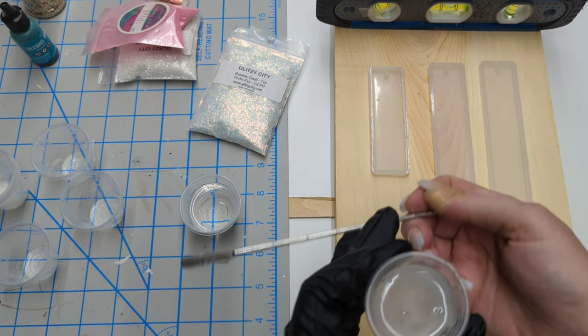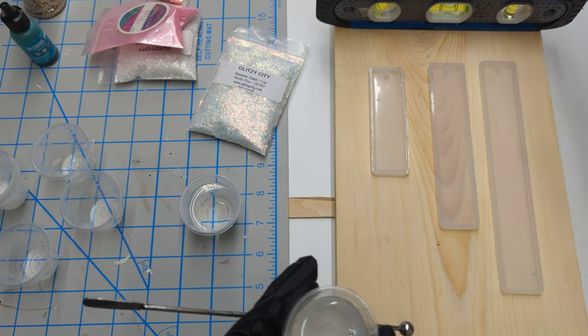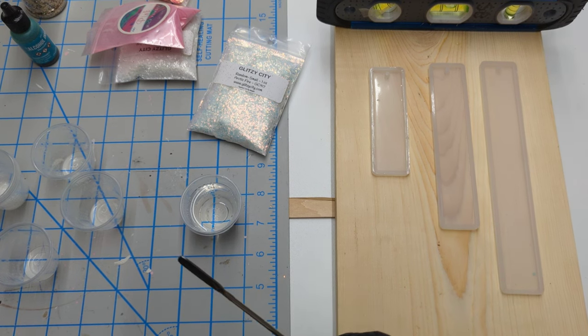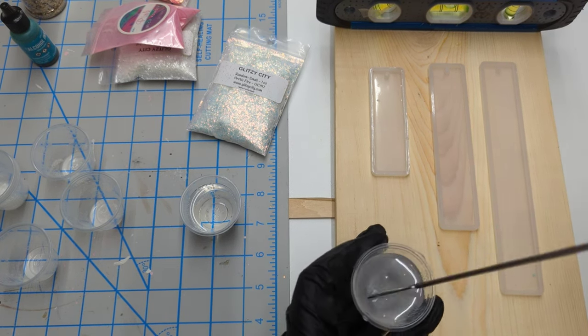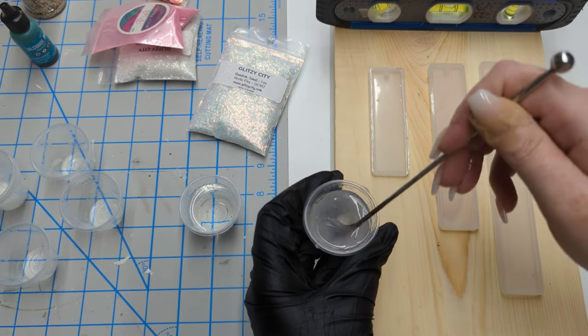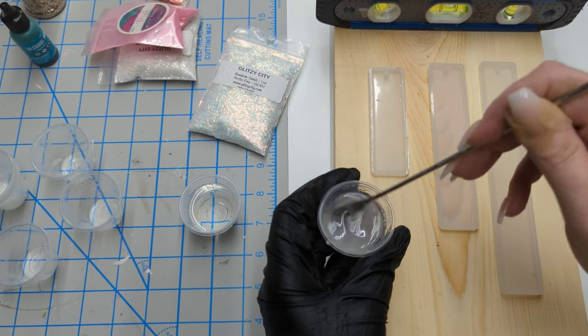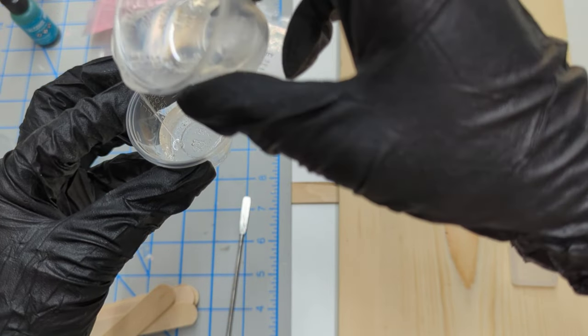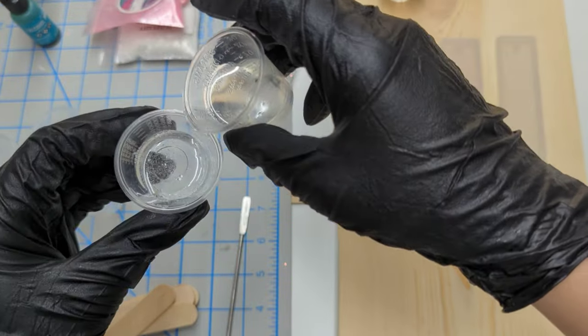I've mixed up a total of 40 milliliters of epoxy. I measured it with water first, so I poured the water into the molds that I was using to get a better idea of how much epoxy I would actually need, and then I just measured and mixed accordingly.